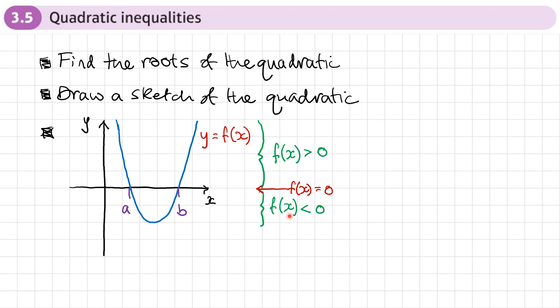So greater than zero is just above the axis. The bit below the axis will help us solve the quadratic less than zero — f(x) less than zero. And when f(x) equals zero, these are the roots. So when we're solving f(x) equals zero, it will be exactly these values.